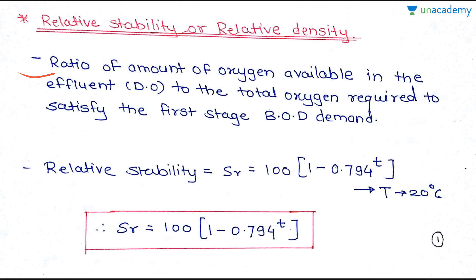Let's see the definition of relative stability. Relative stability is the ratio of the amount of oxygen available in the effluent — that is, DO — to the total oxygen required to satisfy the first stage BOD demand. BOD is the biochemical oxygen demand, defined as the amount of oxygen demanded by microorganisms to decompose biodegradable organic matter under aerobic conditions.